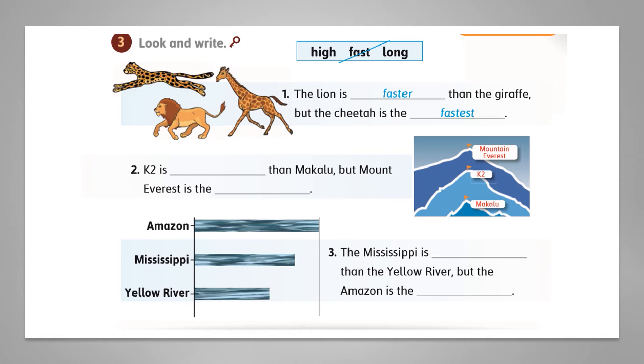K2 is higher than Makalu, but Mount Everest is the highest. So here we should write: K2 is higher than Makalu, but Mount Everest is the highest mountain in the world.